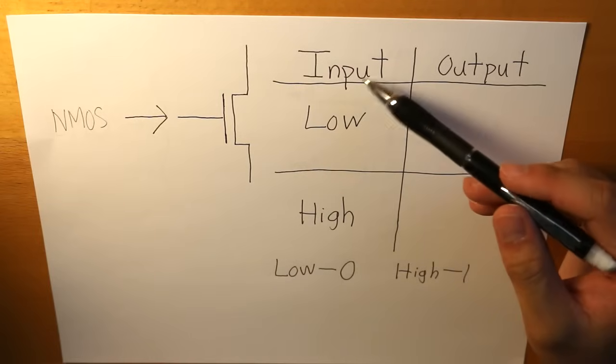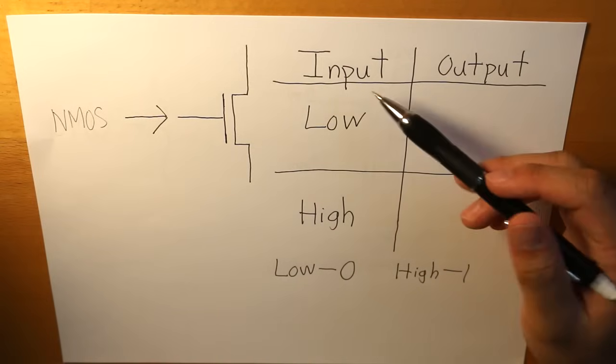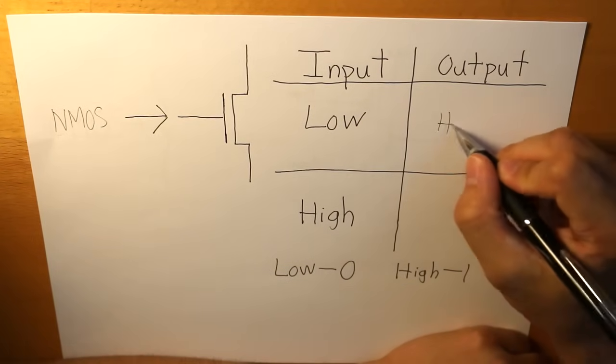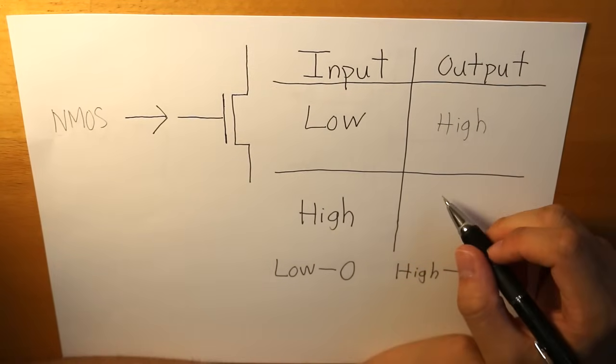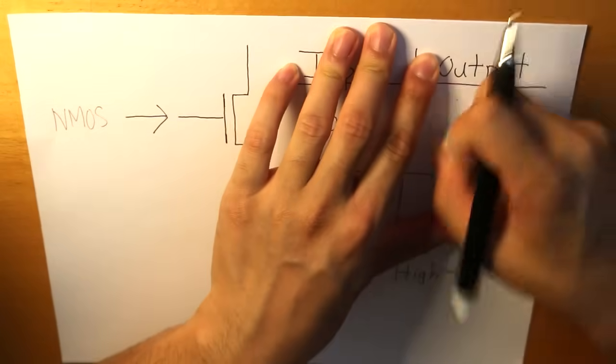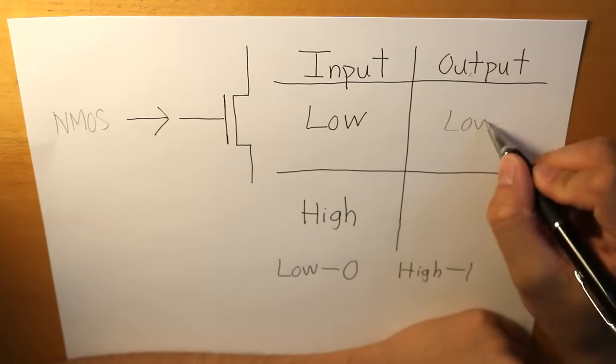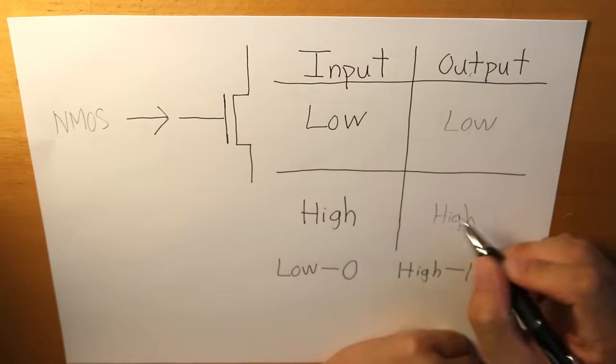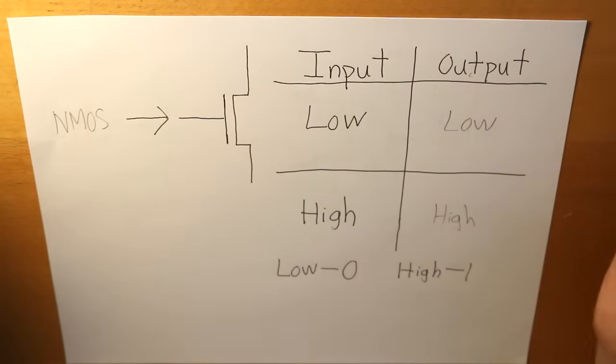For an NMOS, when we input something we're going to get the same value. So if the input is low then the output is going to be low as well. Therefore, if the input is high the output is going to be high, because for an NMOS transistor the output value matches whatever the input value is.